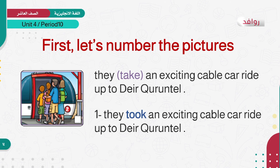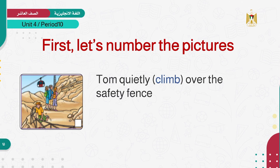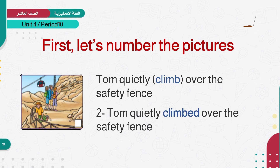Where is picture two? Well done. This is picture two. Written below: Tom quietly climb over the safety fence — as we can see in the picture, the safety fence. When he climbed over it, something obviously happened to him. The verb 'climb' must be changed to past tense. Excellent — climbed. Tom quietly climbed over the safety fence.